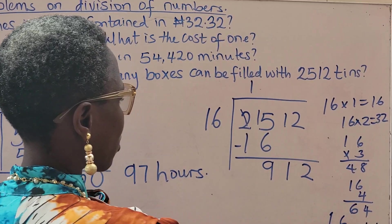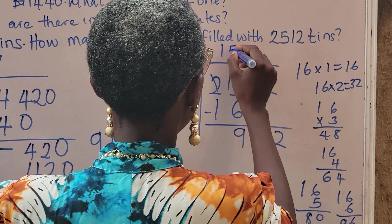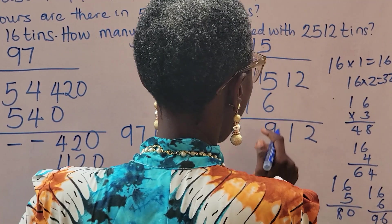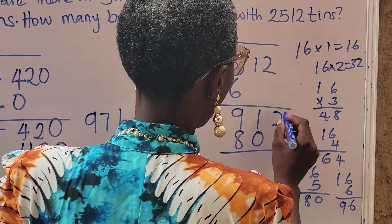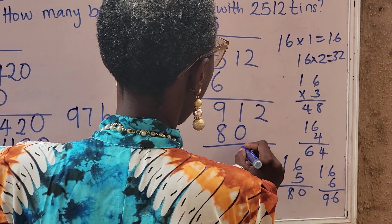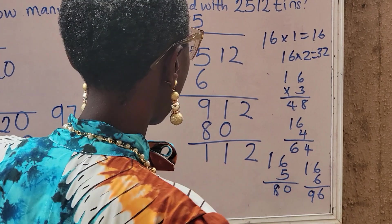I should go with 5 because 96 is already bigger than this. So I have 5. 16 times 5, that's 80. So let's subtract. We have 112. So I can continue.